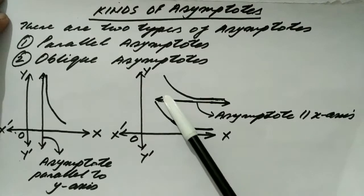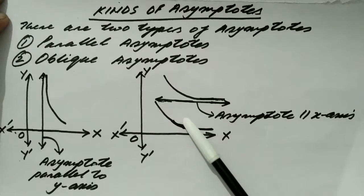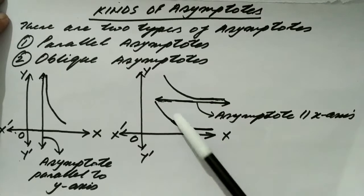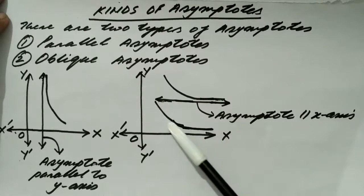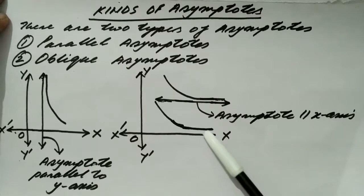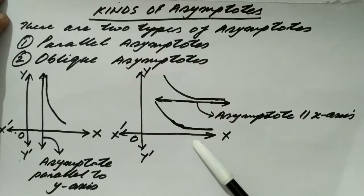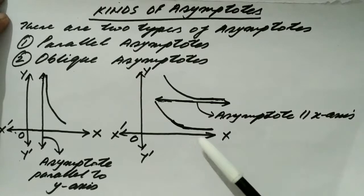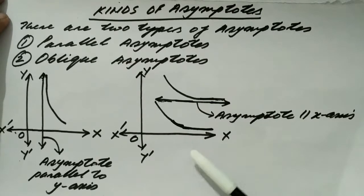The x-axis itself can be an asymptote to any curve. If a branch of a curve seems to be parallel to the x-axis itself, then the x-axis is said to be its parallel asymptote.